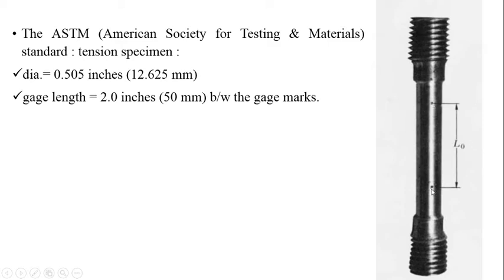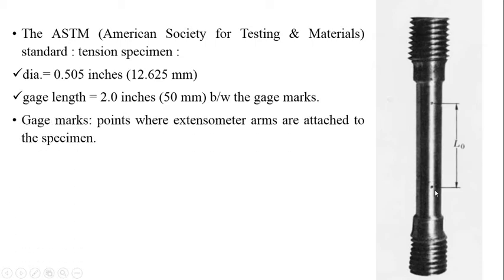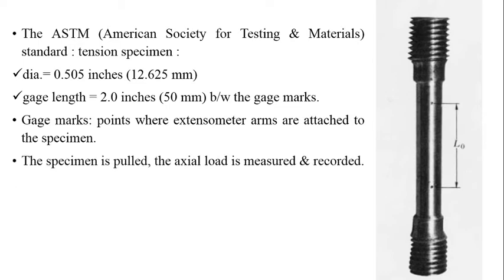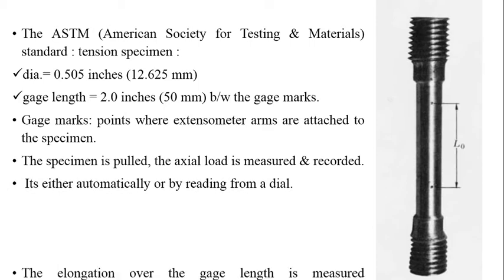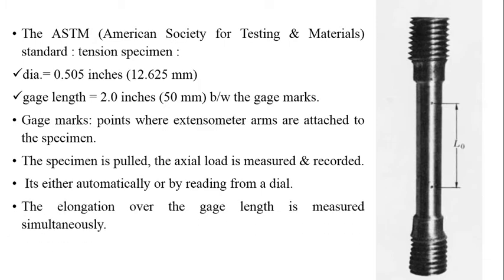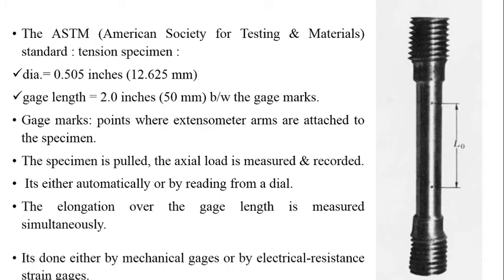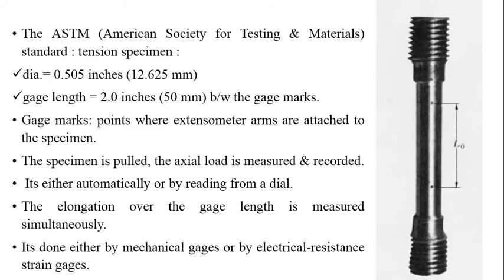There is one gauge mark at each end of the gauge length. The gauge marks are points where the extensometer arms are attached to the specimen to measure the extension. The specimen is pulled, the axial load is measured and recorded — either automatically or by reading from a dial. The elongation over the gauge length is measured simultaneously, either by mechanical gauges or by electrical resistance strain gauges.